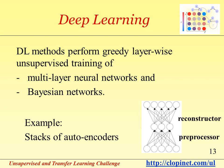Deep learning methods also offer a number of ways in which the preprocessor can be trained. Deep learning methods perform greedy layer-wise unsupervised training of multi-layer neural networks and Bayesian networks. For example, to train a stack of autoencoders, you may start with a two-layer neural network trained to reproduce its inputs. Then you rip out the last layer and train another two-layer neural network to reproduce the first hidden layer representation, and so on.